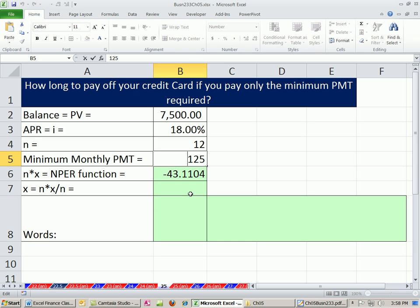I'm going to immediately change this to a minus. So we have a minus $125, that's our minimum payment, and there's our present value.